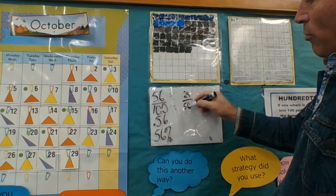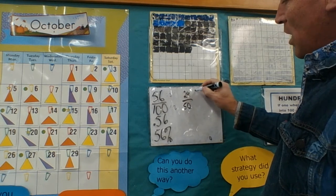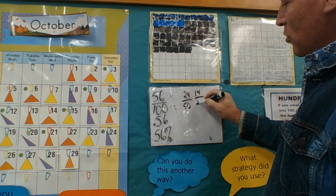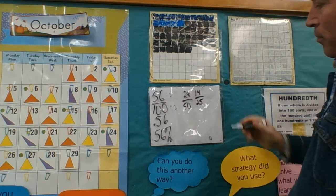I know half of 56 is 28, half of 100 is 50. Well they are still both even, so half of 28 is 14, half of 50 is 25.